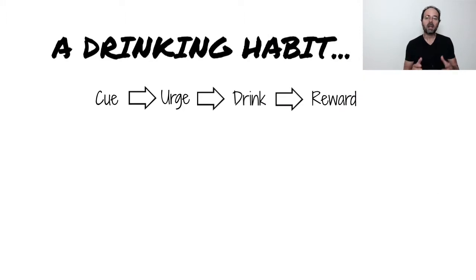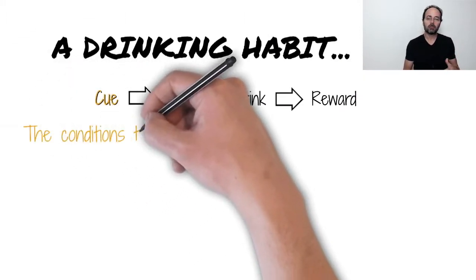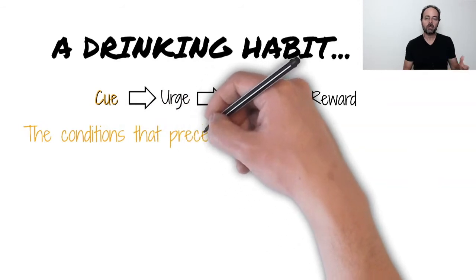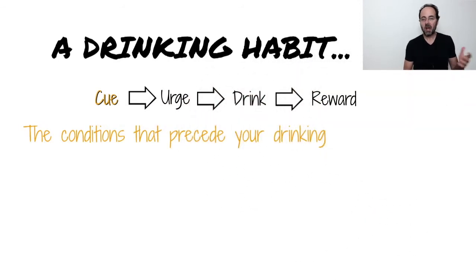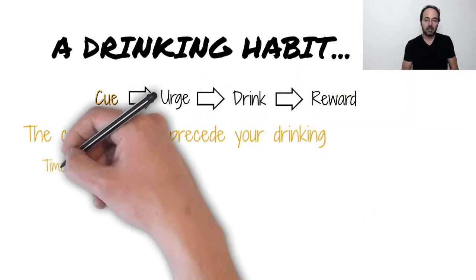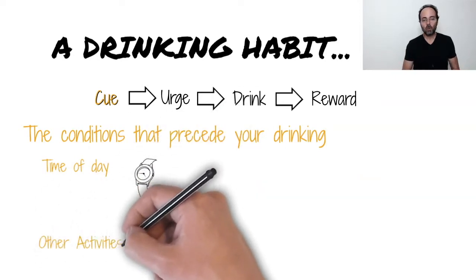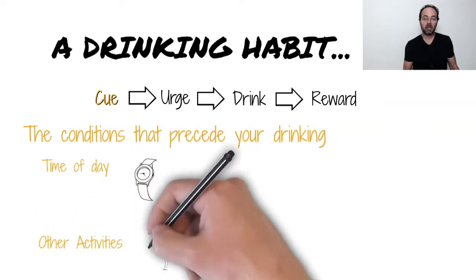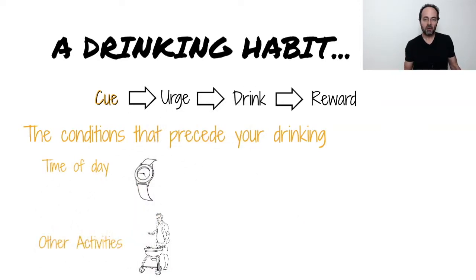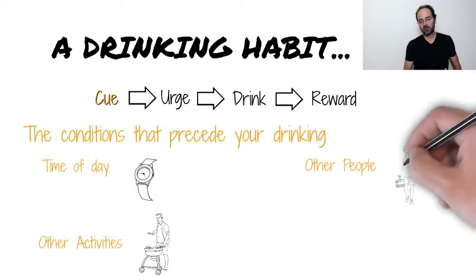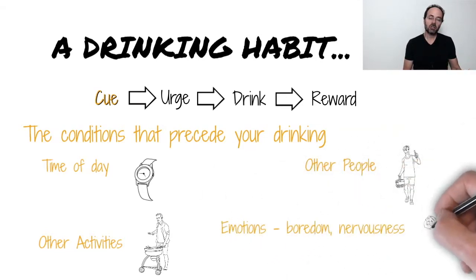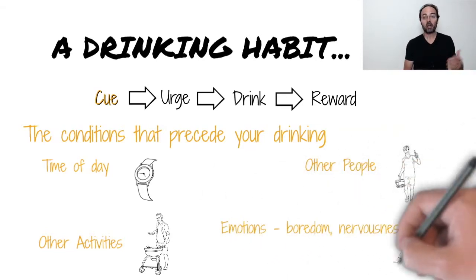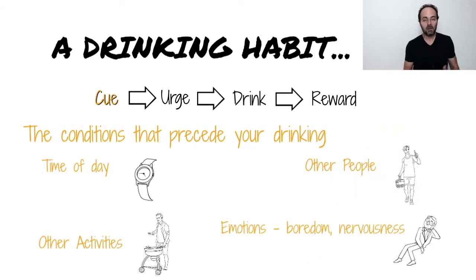The cue in a habit refers to conditions that are present before or when you start drinking much of the time. Examples are the time of day, events like getting home from work, being in the presence of other people who are drinking, and also emotional states like feeling bored or anxious or celebratory can be cues.